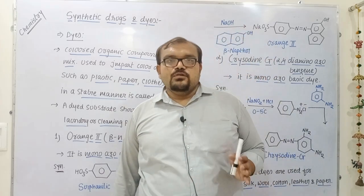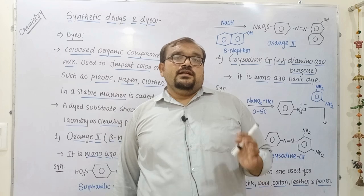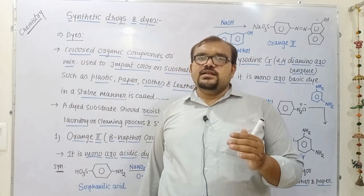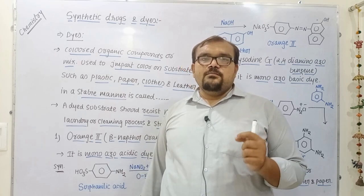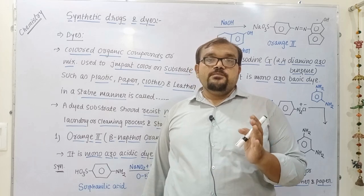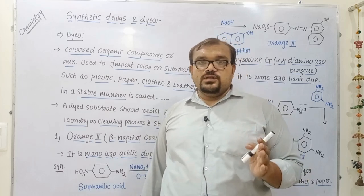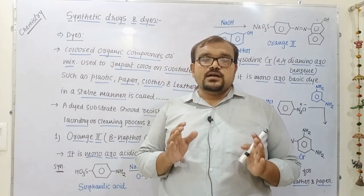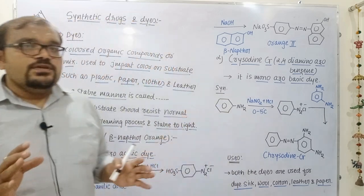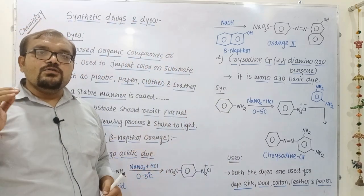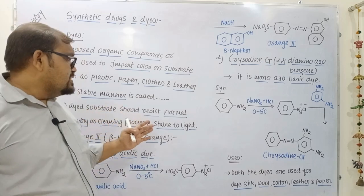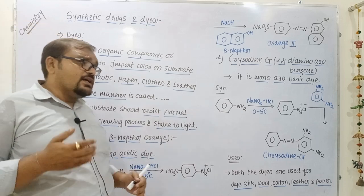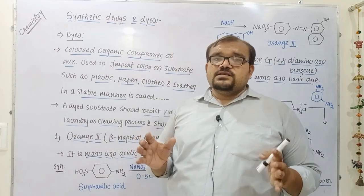The next important topic is dyes. A dye can be defined as a colored organic synthetic compound or mixture which is used to impart color on a substrate such as cloth, paper, plastic, or leather in a stable manner. Such a compound is known as a dye. Important characteristics of dyes are that they should resist normal laundry or cleaning processes and should be stable to light.